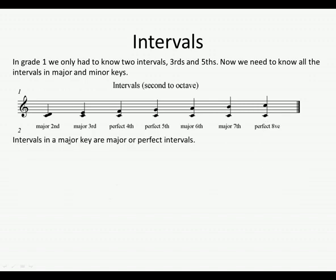Intervals in a major key can be major or perfect intervals. So again, even if you had a D major scale, it would be the same. With the first and second tone degree together, it's called a major second. First and third — major third. First and fourth — perfect fourth. First and fifth — perfect fifth. First and sixth — major sixth. Major seventh, and perfect octave.